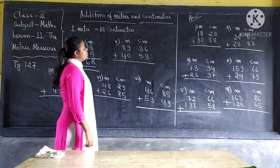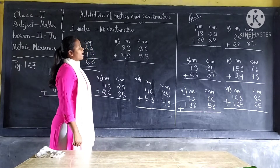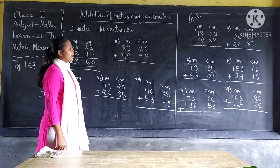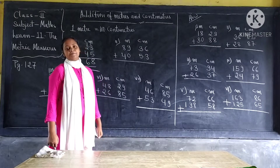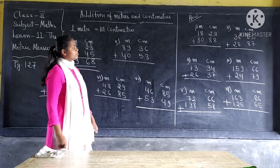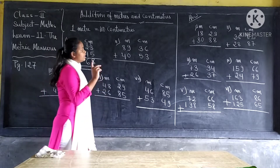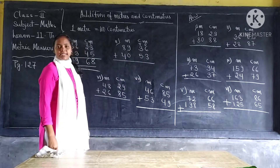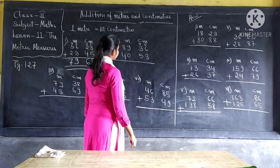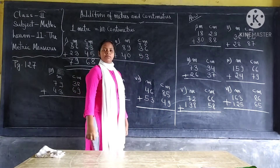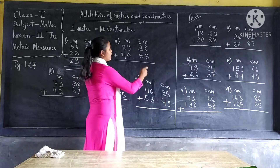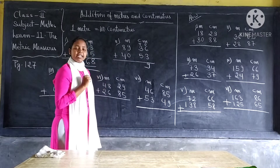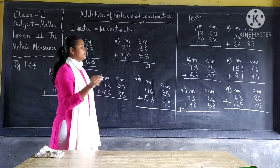Next question: eighty-nine meters and thirty-six centimeters plus forty meters and fifty-three centimeters. So first we are going to deal with the centimeter. Remember, in your mind, this is tens and ones — so it is easy for you to understand. Under ones, six plus three equal to nine. So nine will come here. Under tens, we have three tens and five tens. Three plus five equal to eight.